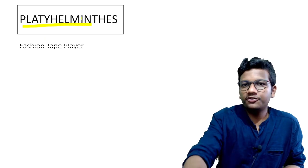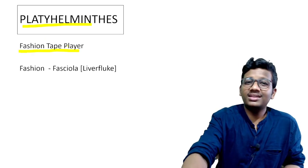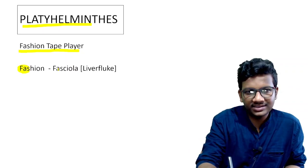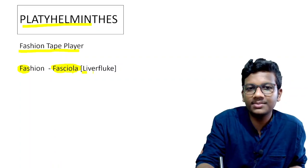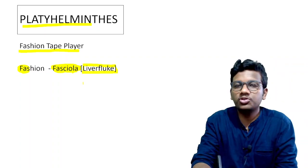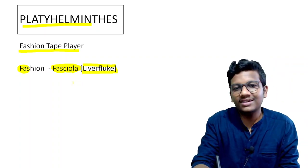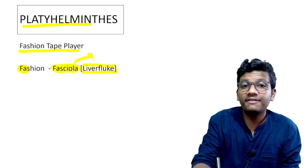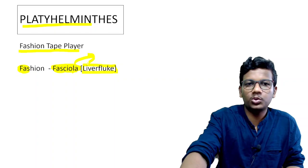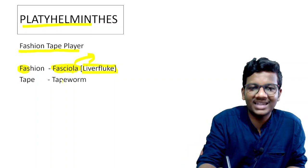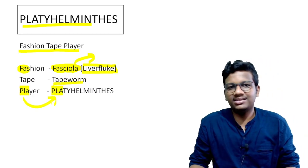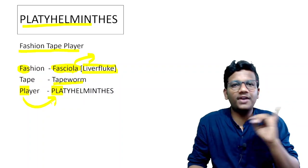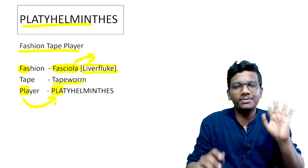The next phylum is Platyhelminthes. The mnemonic is: 'Fashion tape player.' Fashion — first three letters FAS — means Fasciola, whose common term is liver fluke. The complete species name is Fasciola hepatica. Tape means tapeworm, very simple as the name suggests. Player — first three letters PLA — denotes Platyhelminthes. So: Fasciola (liver fluke), tapeworm, Platyhelminthes.